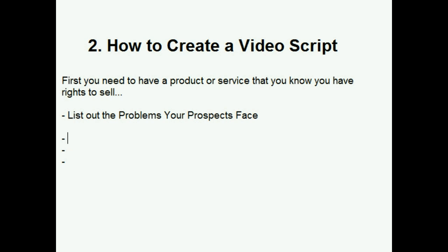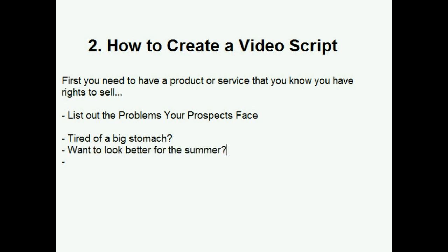For example, let's say I'm selling a health and fitness product — something like an ebook or video on how to lose belly fat and get abs in a certain number of days. The problems your prospect faces include things like being tired of having a big stomach. You can figure out the emotional hot buttons: they want abs to look better in the summertime, like on the beach. So you might list: 'tired of big stomach' or 'want to look better for the summer.' You want at least two problems listed out.